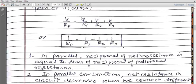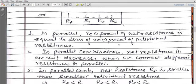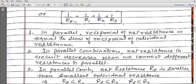V/Rp = V/R1 + V/R2 + V/R3. V cancels out, so 1/Rp = 1/R1 + 1/R2 + 1/R3. This is the expression for finding net resistance when different resistors are connected in parallel combination. We can state this as: the reciprocal of net resistance is equal to the sum of the reciprocals of individual resistances.